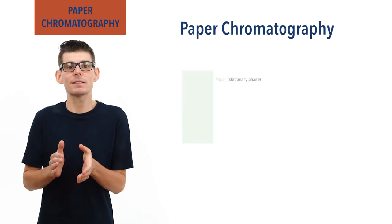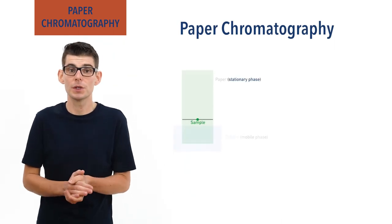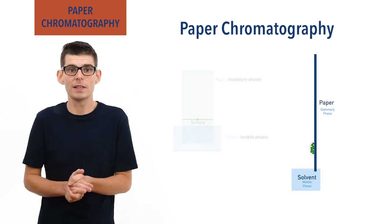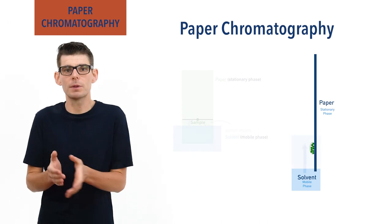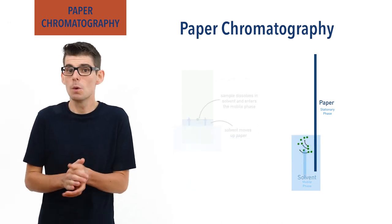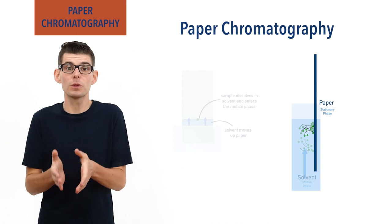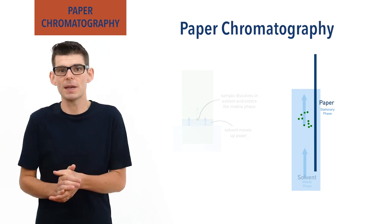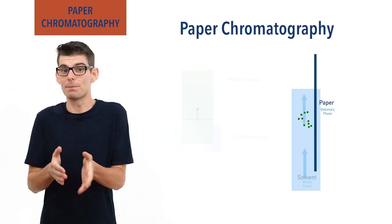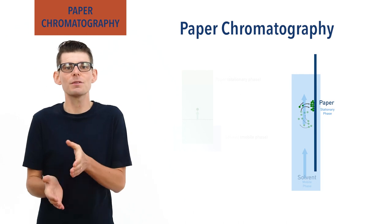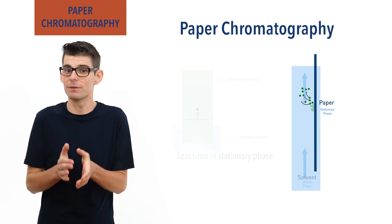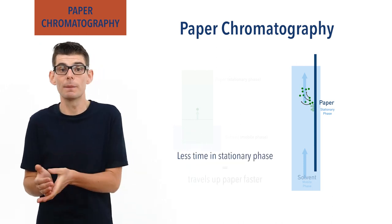The most common example of chromatography is paper chromatography, where the stationary phase is paper and the substance is dissolved in a solvent which acts as the mobile phase. The paper is placed vertically into a small volume of the mobile phase, and as the solvent moves up the paper, the dissolved substances absorb onto the paper, before dissolving back into the solvent and re-entering the mobile phase, travelling up the paper. They then temporarily absorb back onto the stationary phase and repeat the process upwards. The less time a substance spends in the stationary phase, the faster it will move up the paper.